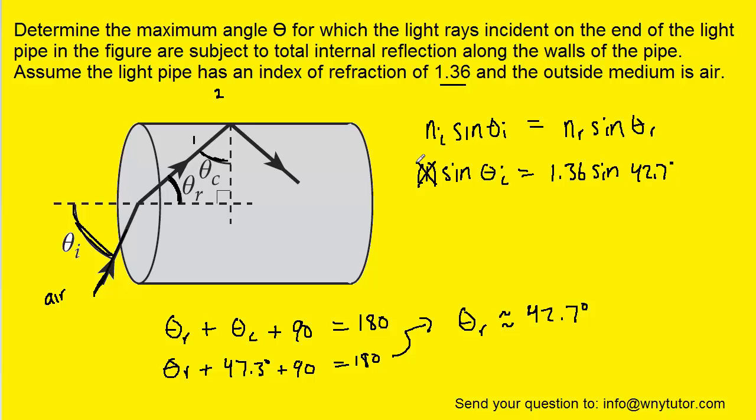And this one really doesn't matter, so you can eliminate that. And then what you can do is take the inverse sine of both sides to get the angle that we're looking for. And when you do that, you should get roughly 67.3 degrees. That is indeed the final answer for the angle that is incident on the end of the light pipe.